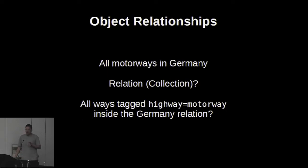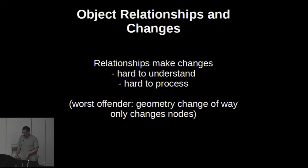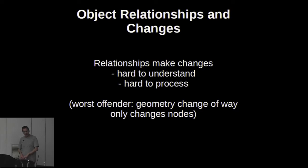Collection relations — like all motorways in Germany — we don't really need those. We don't need associate-street relations or is-in relations either. Relationships between objects make changes difficult. If a user moves a node that is in a way, what they're thinking about is moving the way — the highway going somewhere else. The actual change in our data model is in the node, not the way. Relationships are hard; if we can get around without them, it's easier.